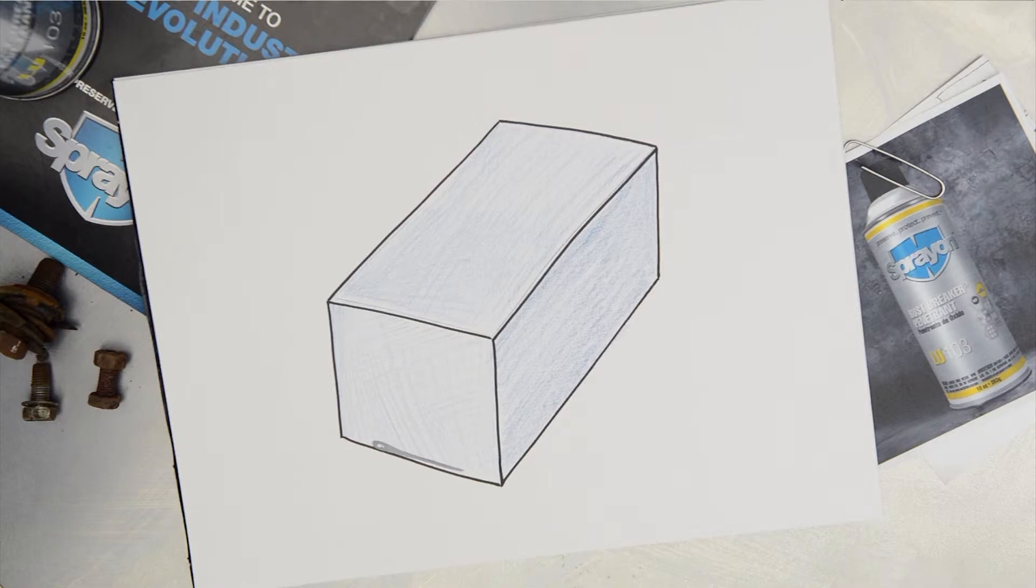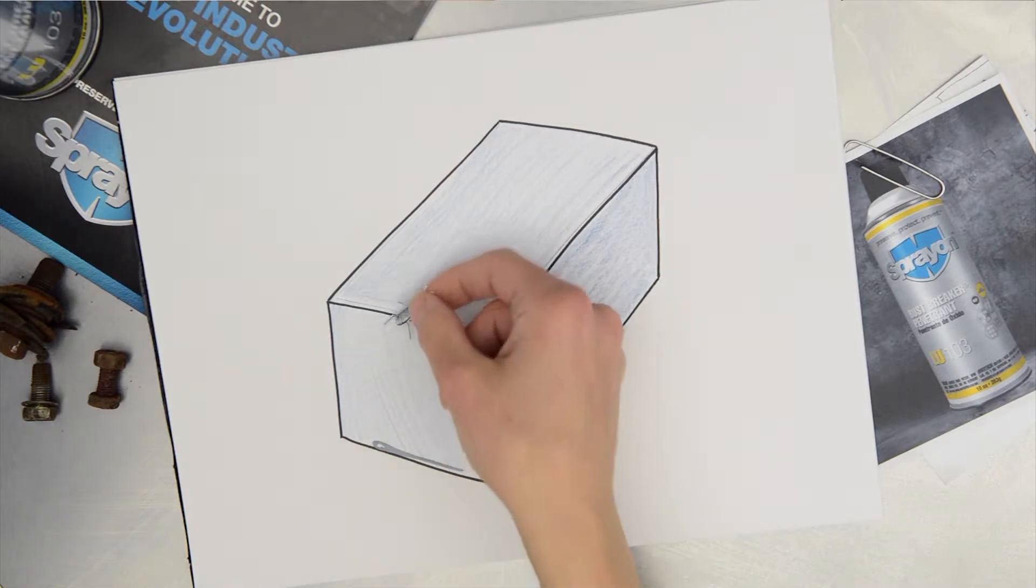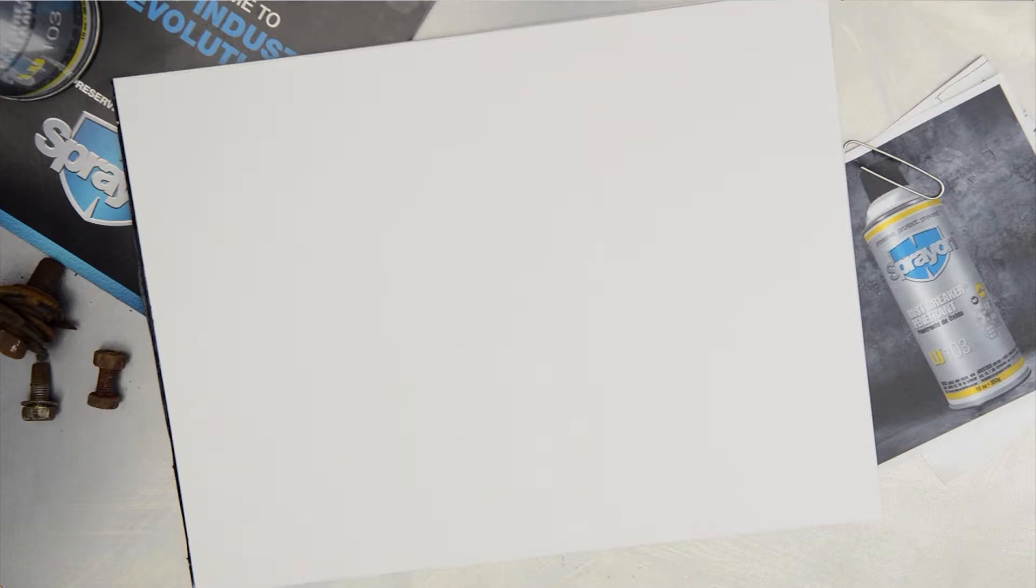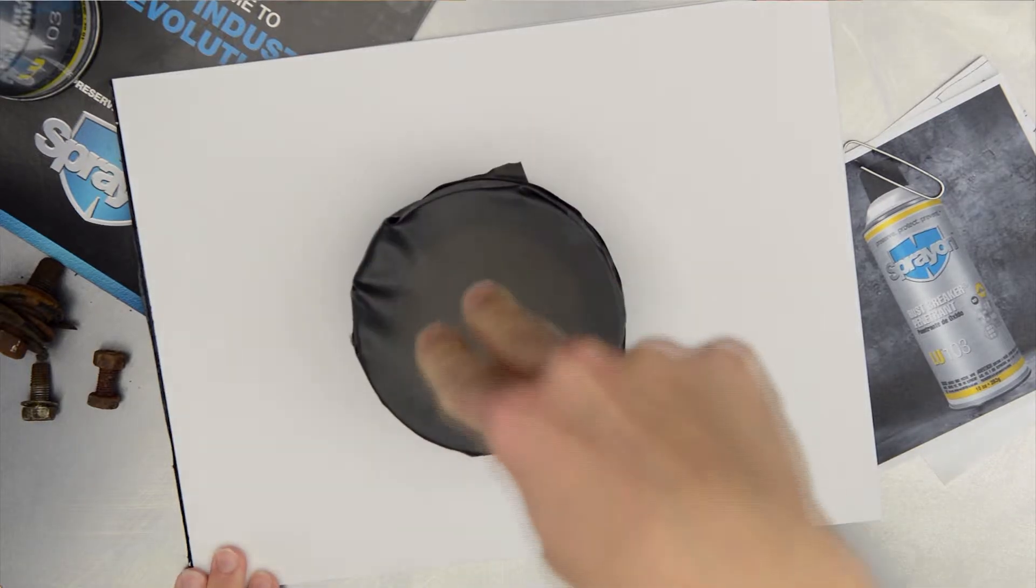Surface tension is also what allows some insects, like water striders, to run on the surface of water by denting the surface, just as we might if we were running on a trampoline.